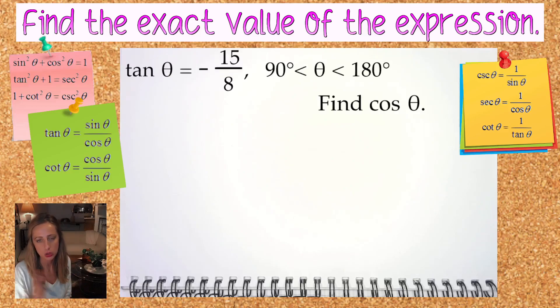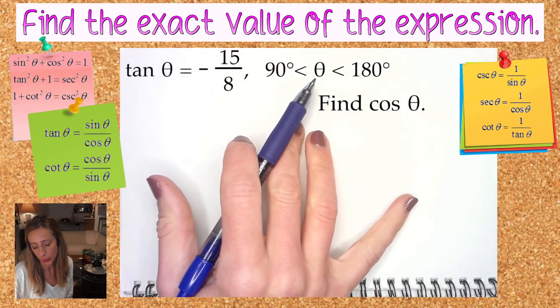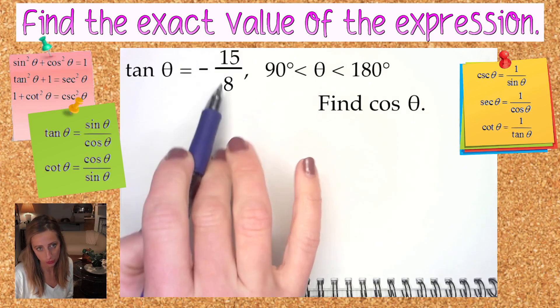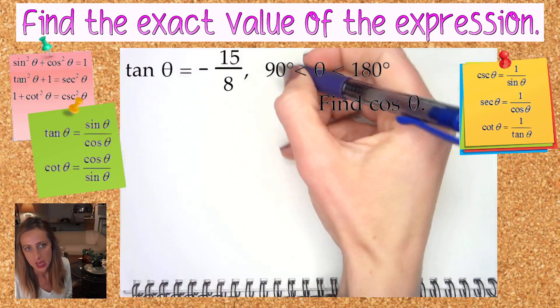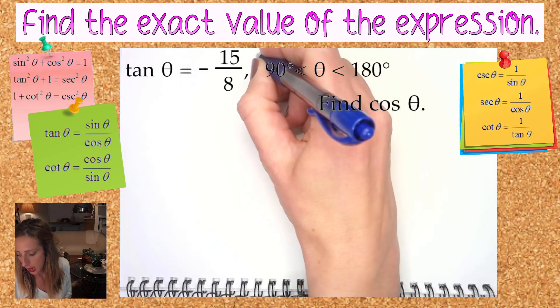So what does that do for us? A couple things. For starters, I know we're concentrating on quadrant two, and I know that since tangent is the ratio of 15 over 8 (and we'll deal with that negative in a moment), and I know tangent from my days in geometry, right, TOA as opposite over adjacent.